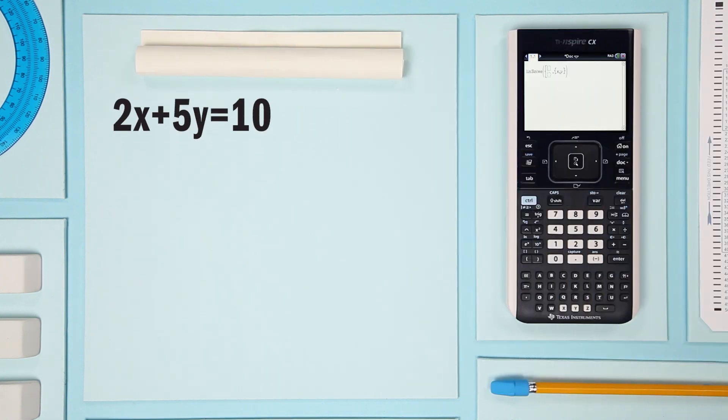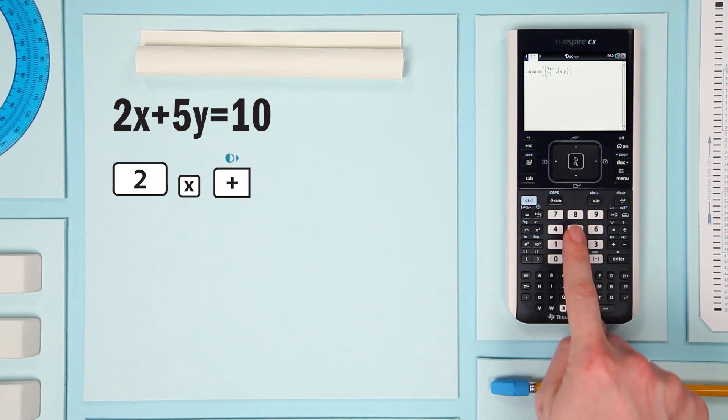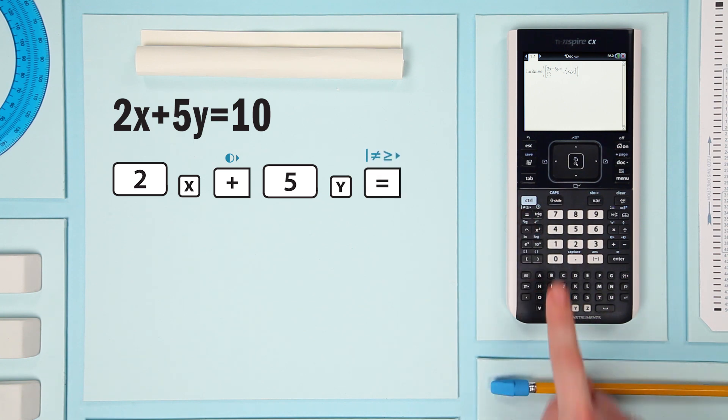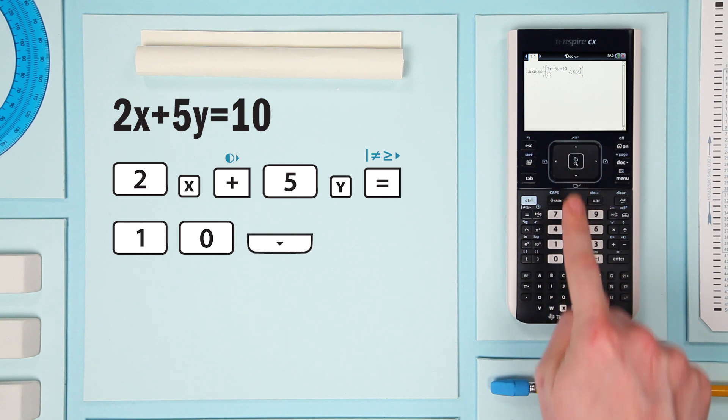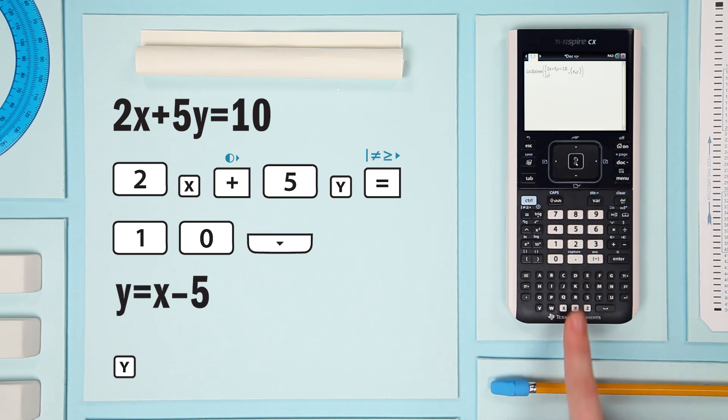Plug in your equation 2x plus 5y equals 10. Arrow down and enter the second equation. y equals x minus 5. And enter.